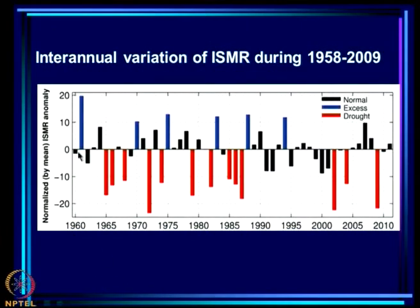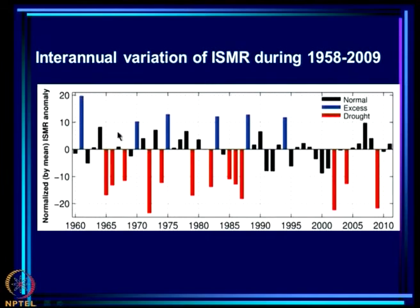Looking at observations from 1960 onwards — the ENSEMBLES runs were made from 1960 — these are the excess monsoon years and these are the droughts. We use mean rainfall for 1960 to 2009 so the model period is comparable. The year 1961 had the highest rainfall recorded; then 1970, 1975 (a La Niña excess), 1983 (an excess), 1988 (an excess), and 1994 (an excess), along with a number of droughts.